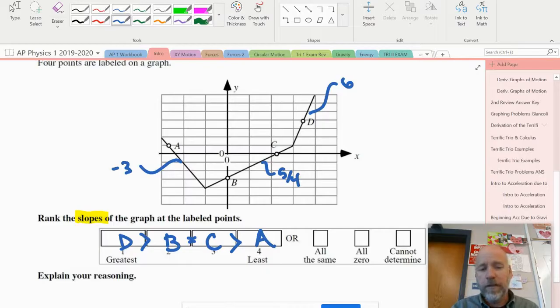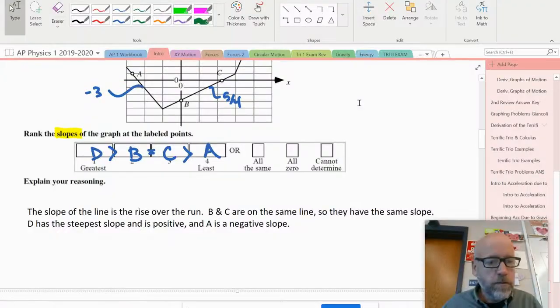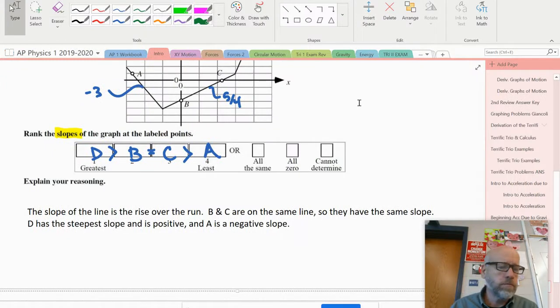This is what you got: the slope of the line is the rise over the run. B and C are on the same line so they have the same slope. D is the steepest slope and is positive, and A is a negative slope. I had you do that just to highlight that you have to read the question really carefully, and I wanted to highlight the difference between magnitude and a value that's just the slope, which would also necessitate the direction.